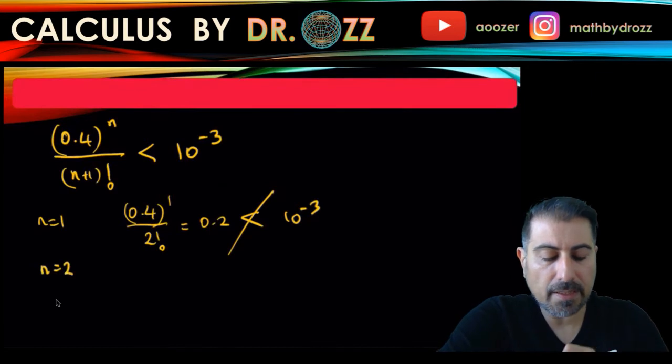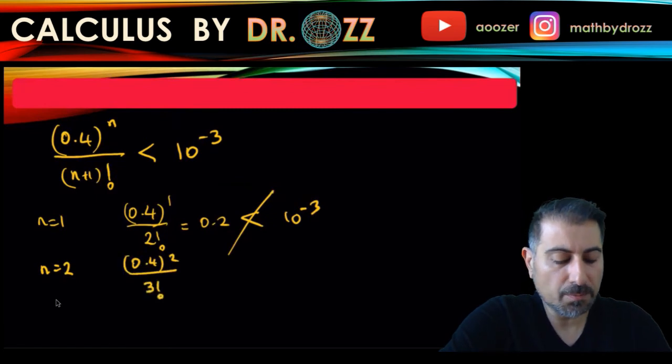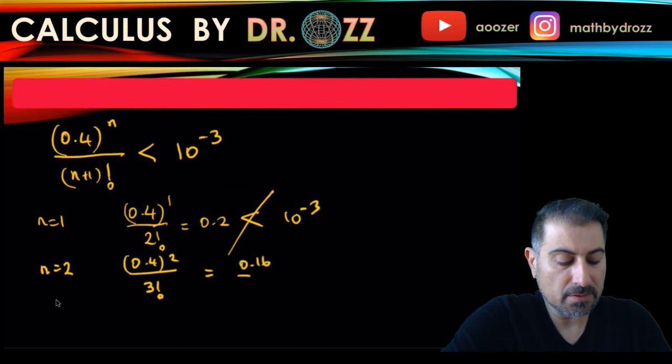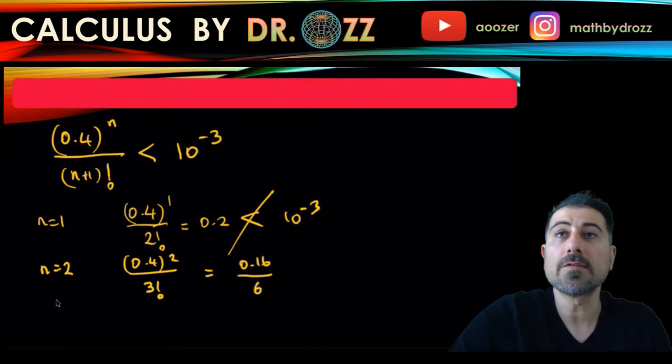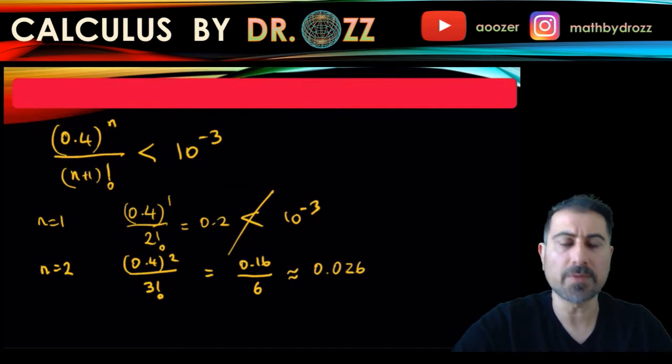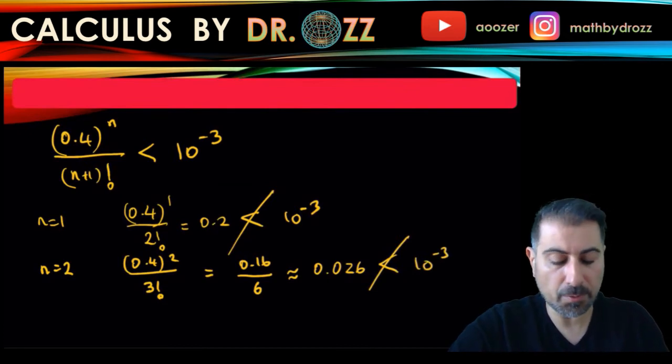You can go ahead and look at n equals 2, 0.4 squared divided by 3 factorial, 0.4 squared is 0.16 divided by 6. Why don't you use your calculator right now to come up with 0.16 divided by 6? All right, so you should have had something closer to 0.026. That is not less than 10 to the minus 3, so I should keep going.